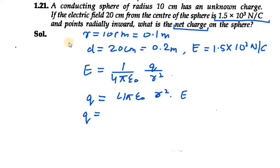Substituting the values: r² = (0.1)², E = 1.5 × 10³. When you put these into the equation for q and solve, you will get the solution.